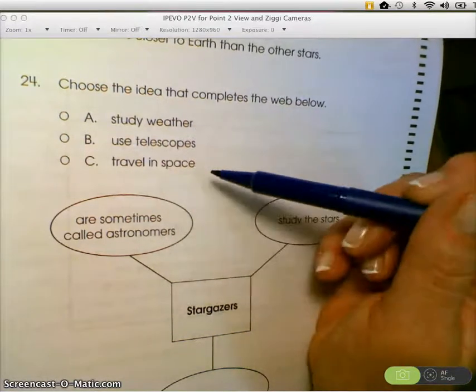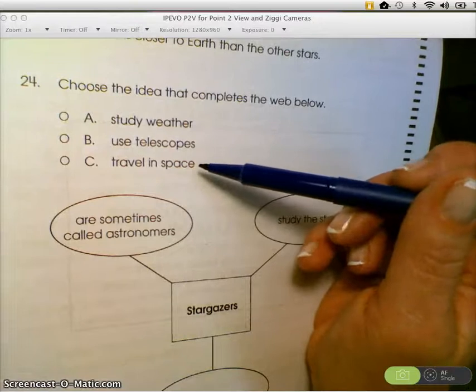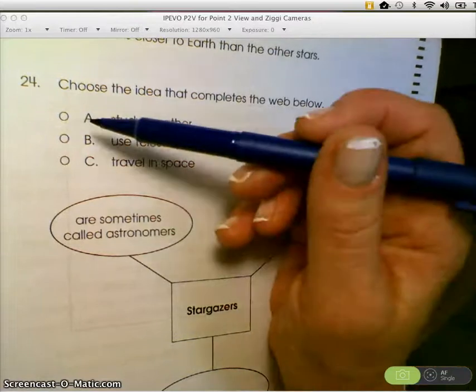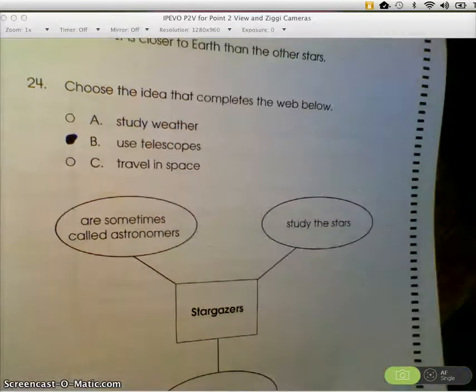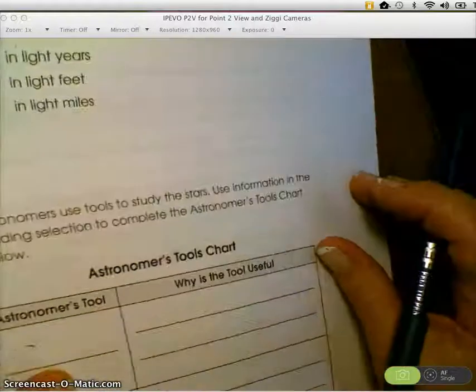And C. Do stargazers travel in space? No. They are not astronauts. So B. They use telescopes, is your answer here.